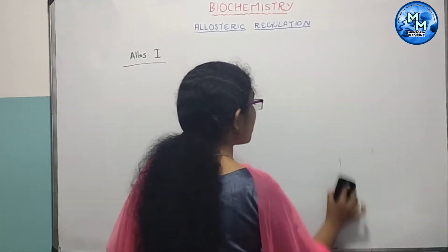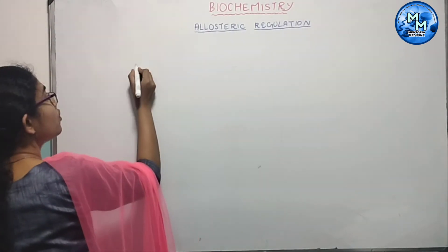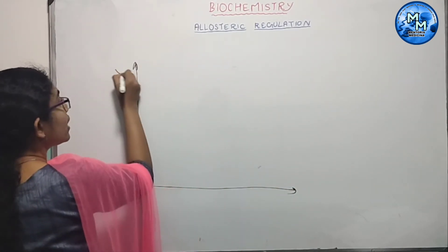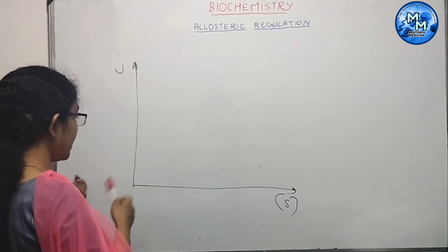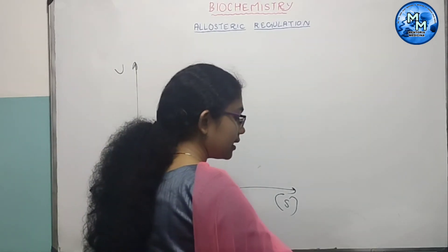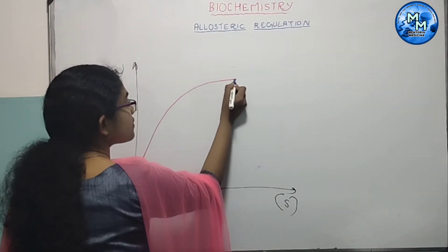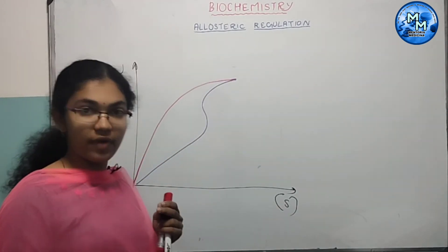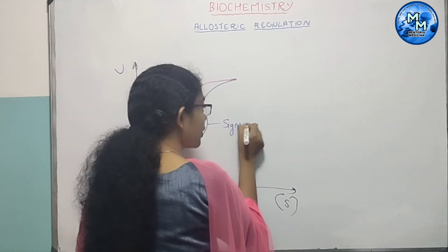Now, for a normal enzyme, the velocity versus substrate graph is hyperbolic. But for an allosteric enzyme, the velocity versus substrate graph is sigmoid.